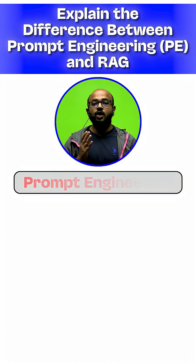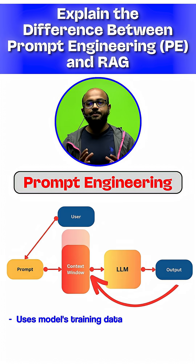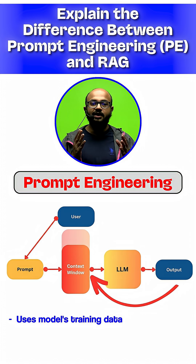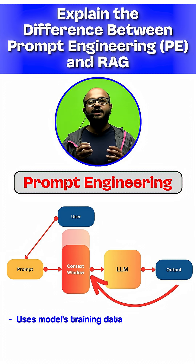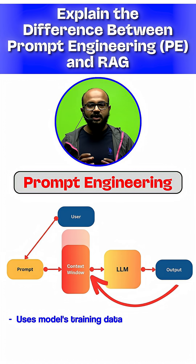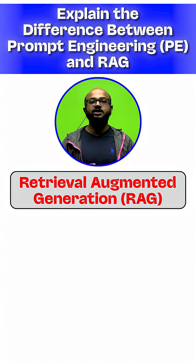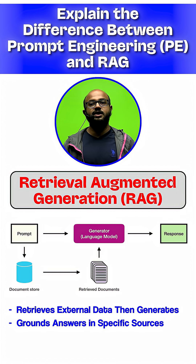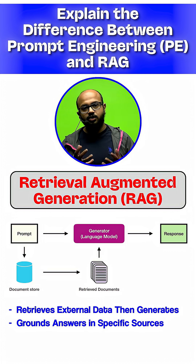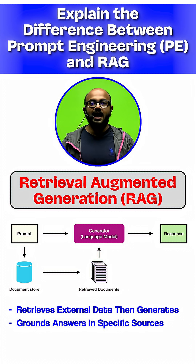Think of it like this. Prompt engineering is a technique to get the best answer from the LLM's own training data — its internal brain — like asking someone a question assuming they already know it. RAG, however, is an architecture. You retrieve information from an external source first, like documents or databases, then you give the retrieved information to the LLM as context.